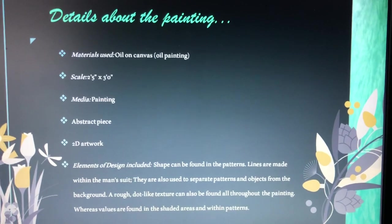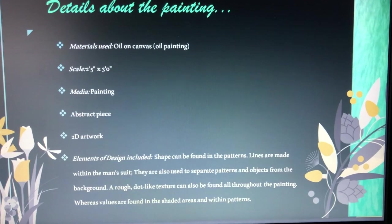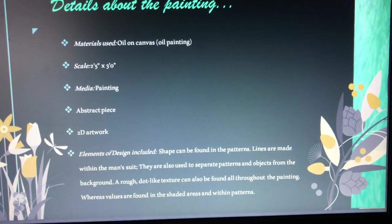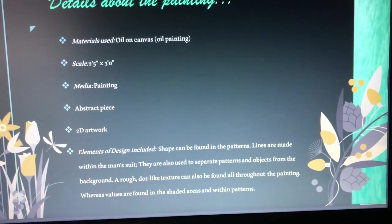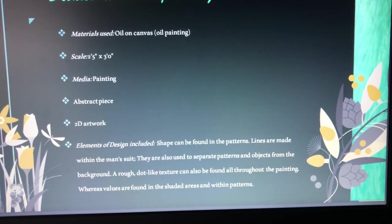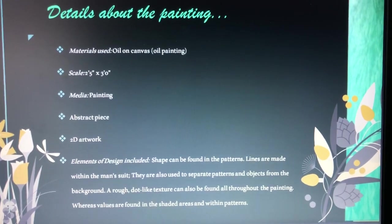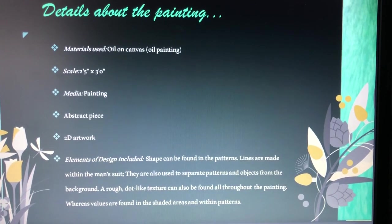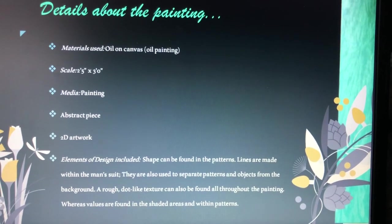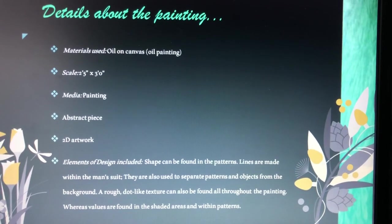With the details about the painting — I did already show the scale but it is about 2.5 feet by 3 feet. The media is that it's an oil painting, so for the materials used I put oil on canvas. It's an abstract piece, so not very realistic, even though it does use a lot of real life things. It's a 2D artwork. Elements of design you'll see throughout this presentation include shape found in the patterns, and lines made within the man's suit, but lines are also used to separate patterns and objects within the background.